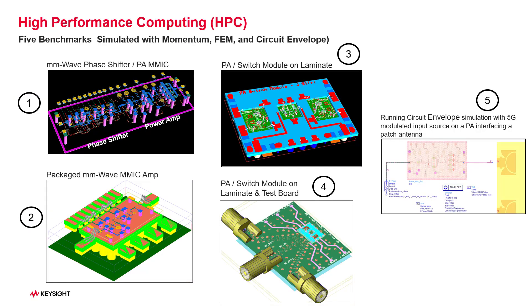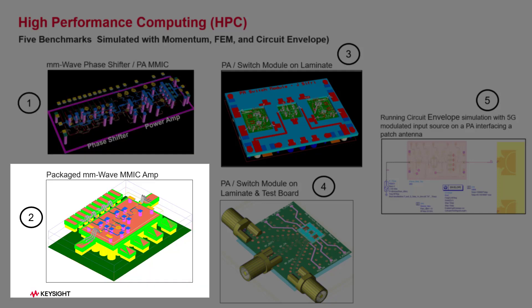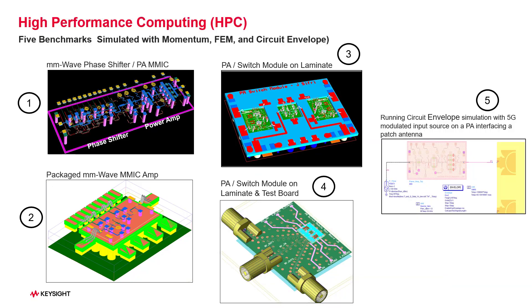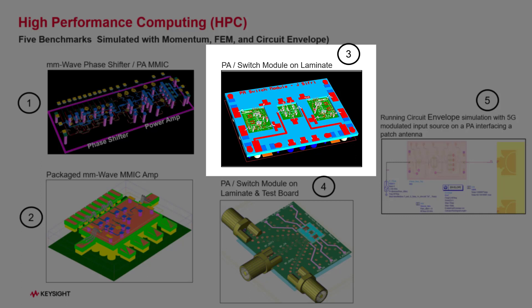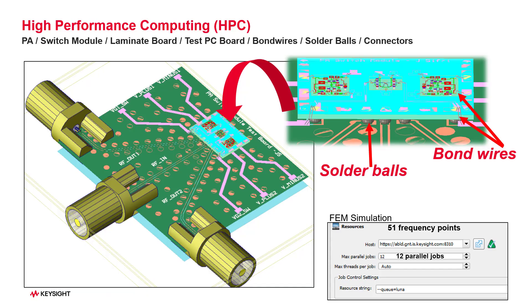Let me share with you five benchmarks I have recently performed. The first is a millimeter wave MIMIC phase shifter followed by a three-stage PA power amplifier for 5G applications. The second is a millimeter wave amplifier inserted in a QFN package with bond wires. The third example is a PA switch module with three MIMICs, two PAs, and a switch assembled on a laminate board. The fourth example is the PA switch module of example 3, placed onto a PC test board with added solder bumps and 3D connectors.